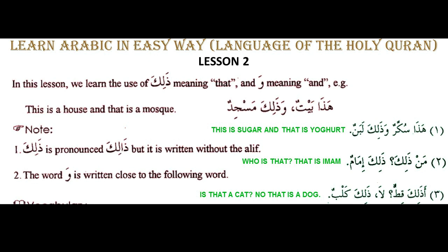We can note a few things. First of all, Dalika is pronounced 'Dalika', but it is written without the alif. As we said before in our first lesson about the word Hadha — Hadha is written without alif, but it is pronounced 'Hadha'. The same thing happens here. Dalika is pronounced 'Dalika', but it is written without the alif.